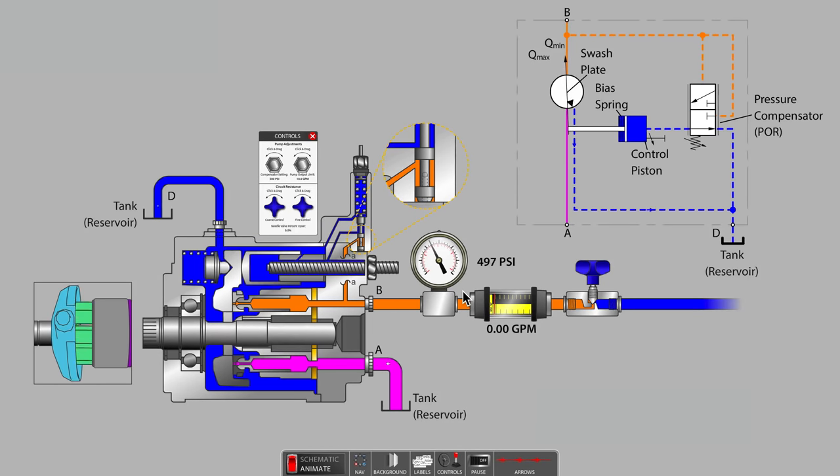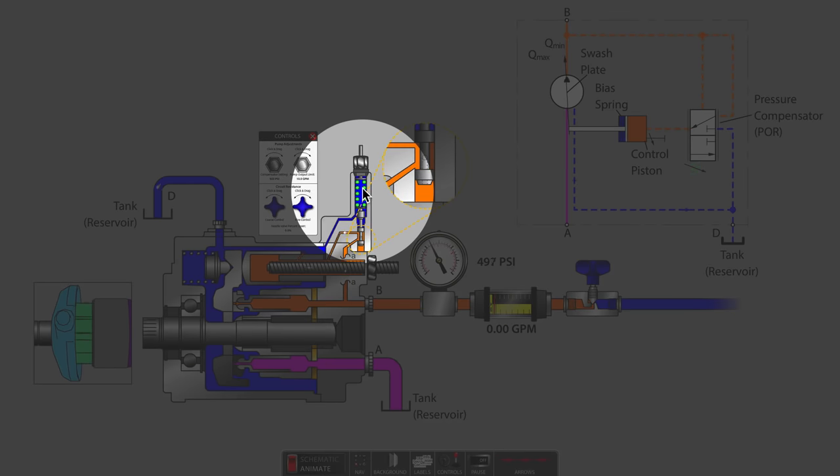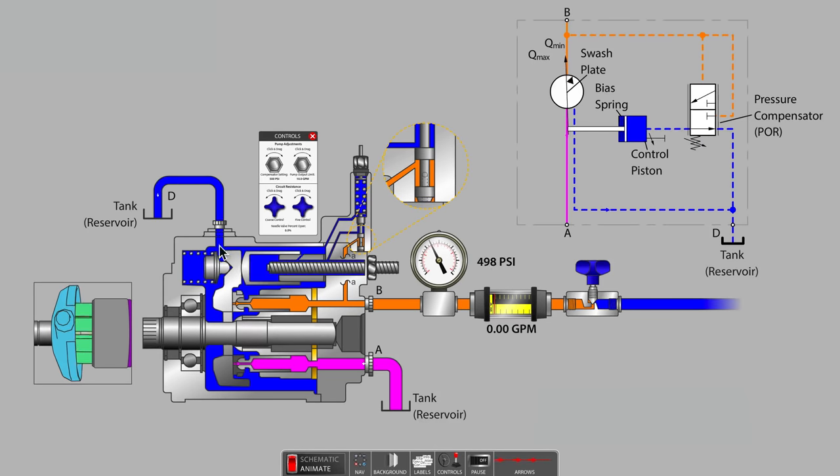In every piston pump, some fluid is leaking internally between close fitting parts. When the swashplate is perfectly vertical, this leakage causes the system pressure to drop slightly. The spring inside the pressure compensator pushes the spool downward to the closed position. This allows the bias spring to push the swashplate back towards the maximum angle, which would increase the stroke length of the individual pumping pistons.